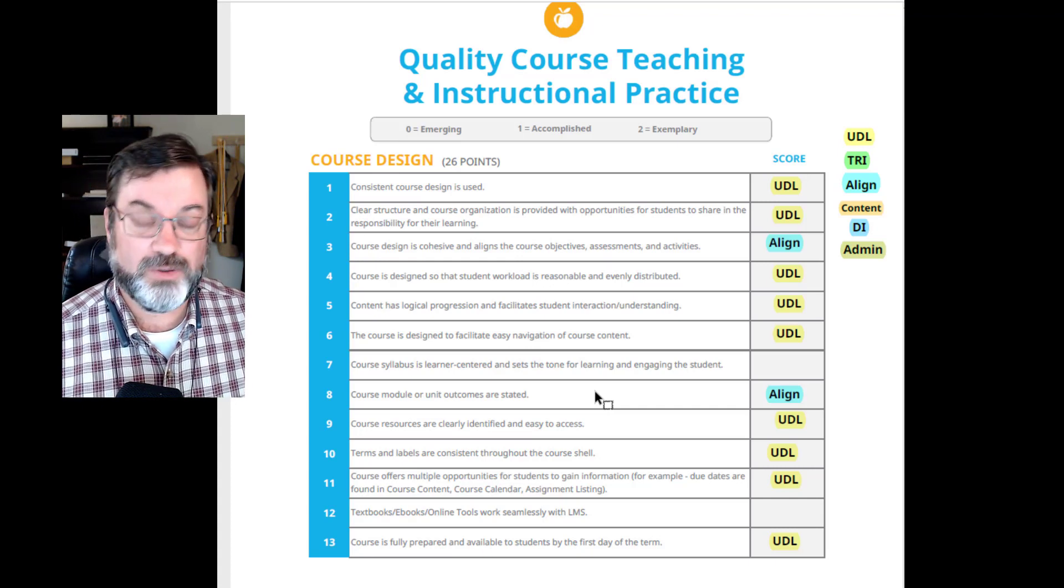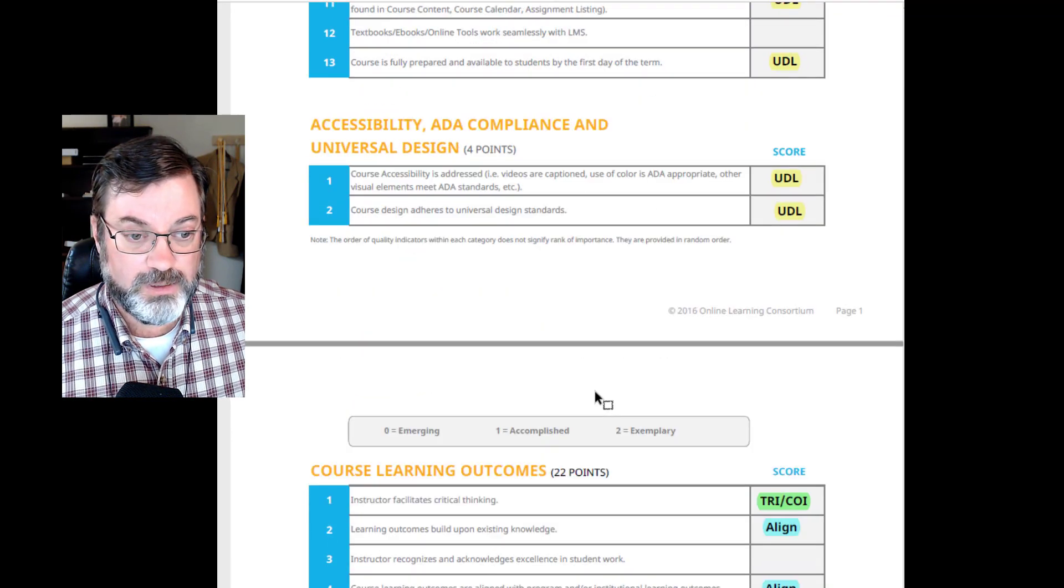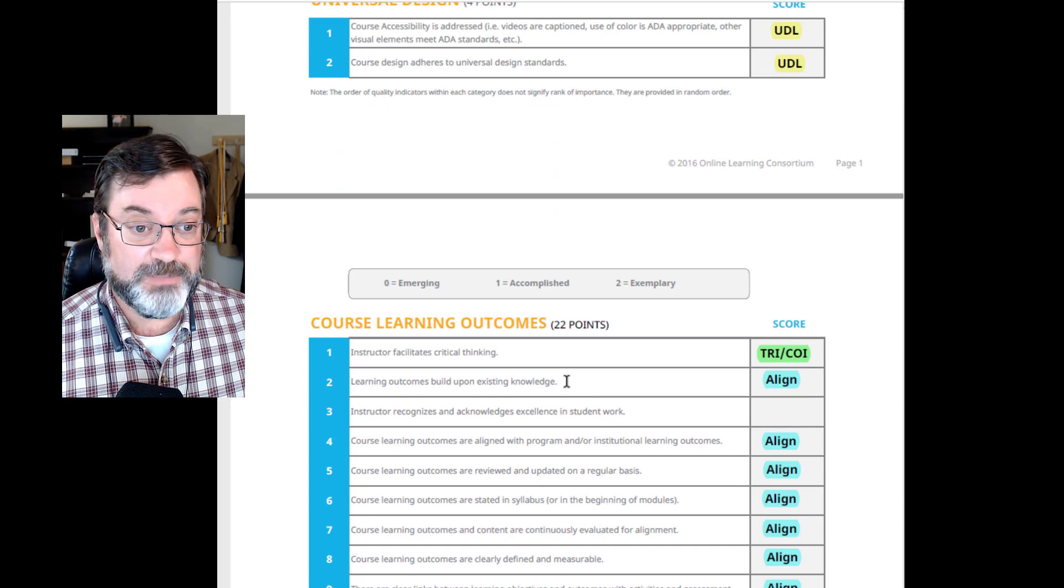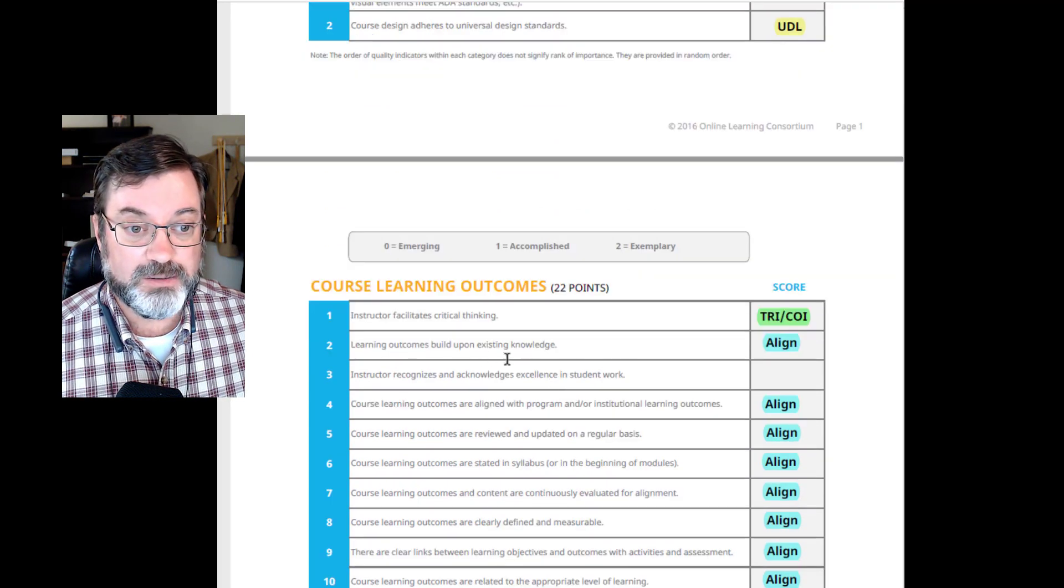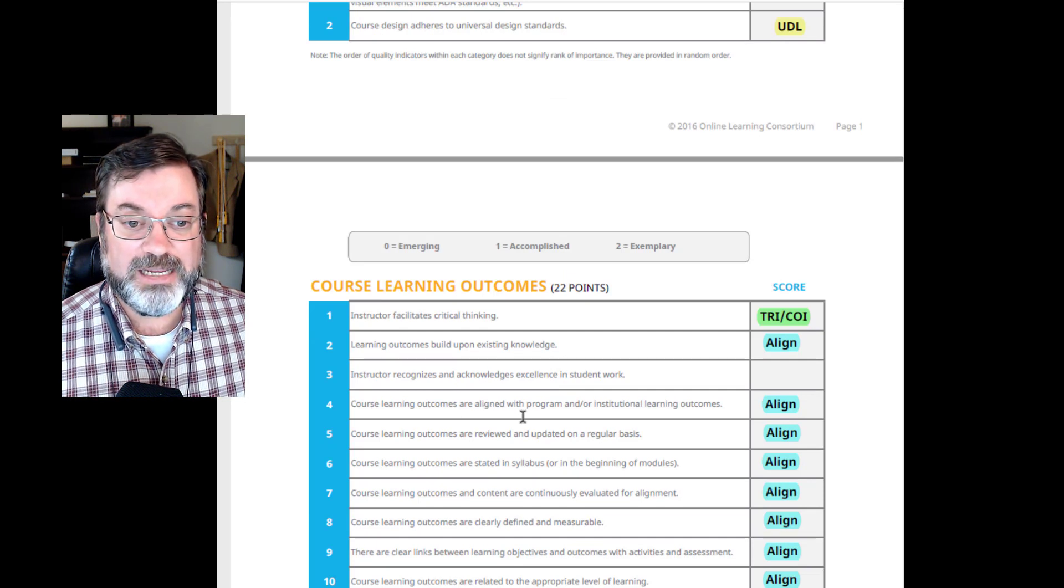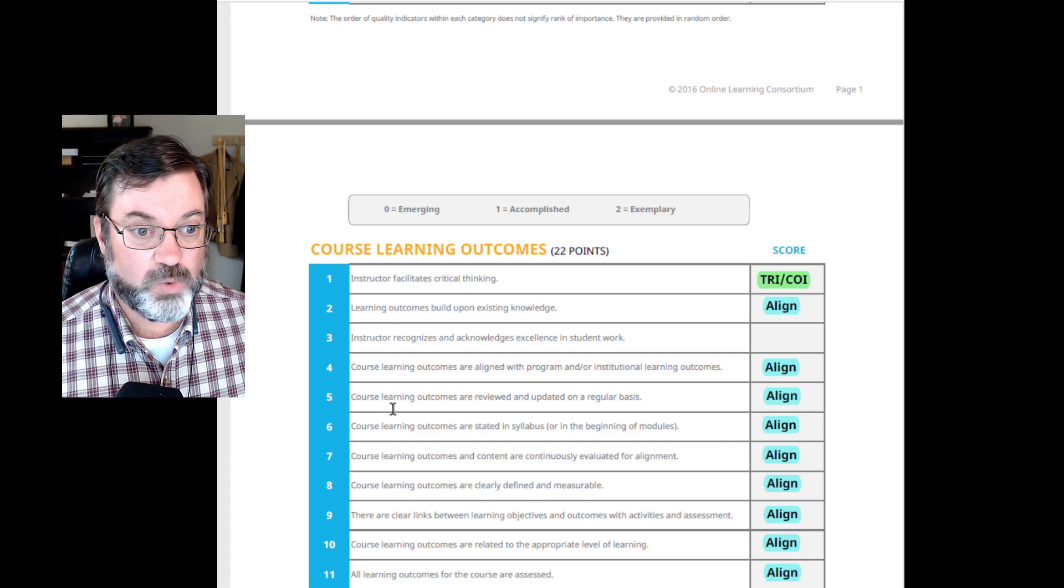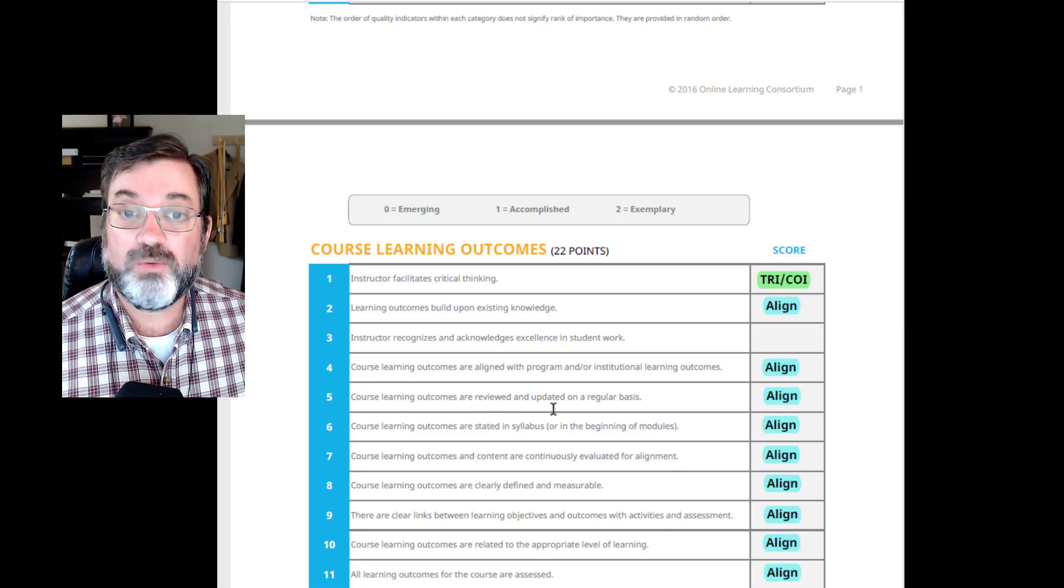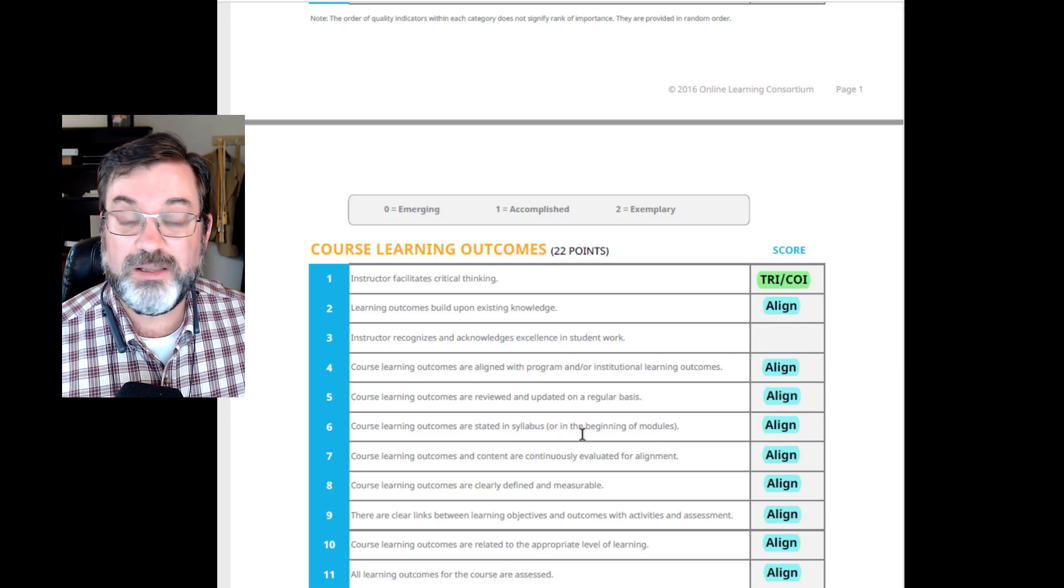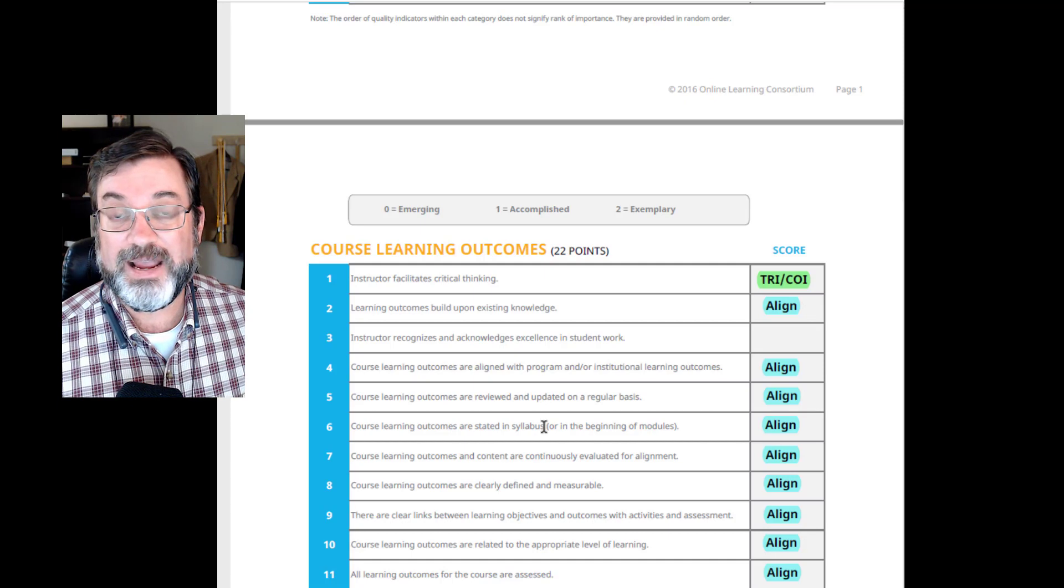Scrolling through course learning outcomes, a lot of these are satisfied by good alignment. Learning outcomes build upon existing knowledge. Course learning outcomes are aligned with program and/or institutional learning outcomes—very important. Course learning outcomes are reviewed and updated on a regular basis. Course learning outcomes are stated in the syllabus or in the beginning of the modules. We want to make sure the students know from the very outset what it is we're trying to achieve with this course.